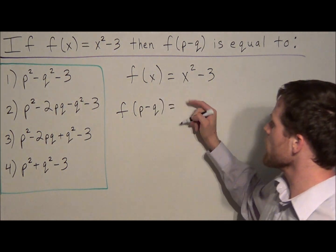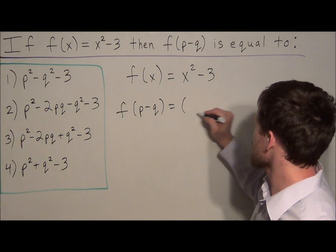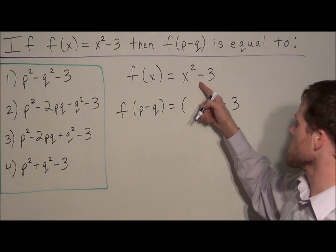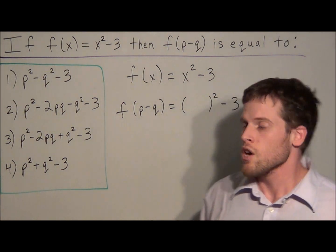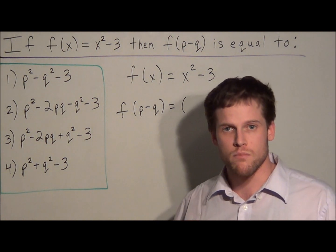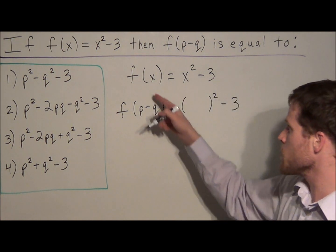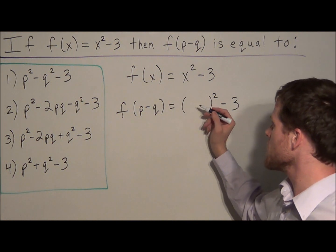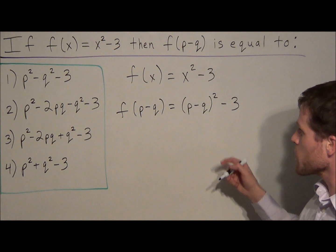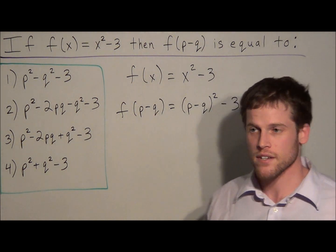what we want to do is, wherever we see an x, we're going to put a pair of blank parentheses. So we're going to write blank squared, and we have minus 3 after the x term. So at this step, what this means is, think of the function as a machine. We're plugging p minus q into the machine, so wherever we see an x, we're replacing the x with p minus q. So all we did was substitute p minus q in wherever we saw an x.